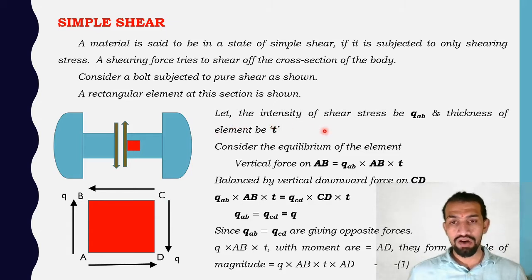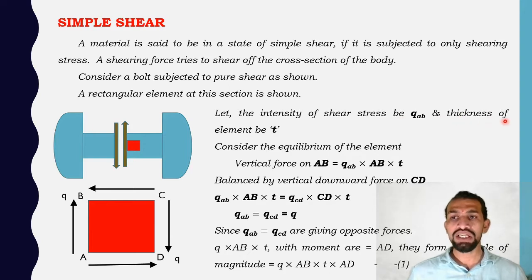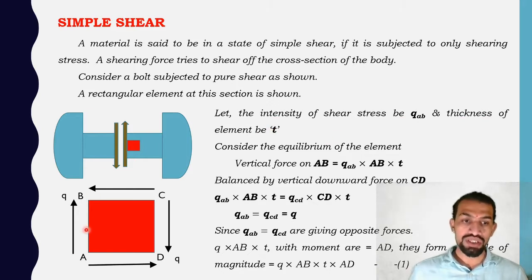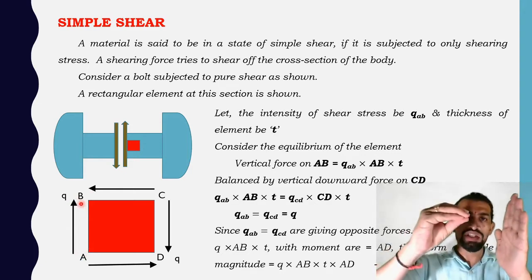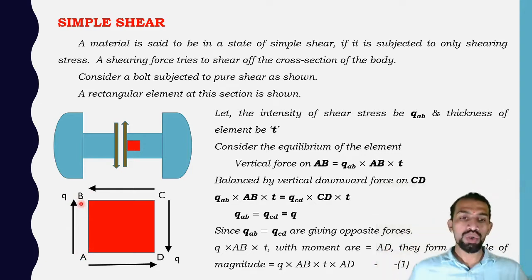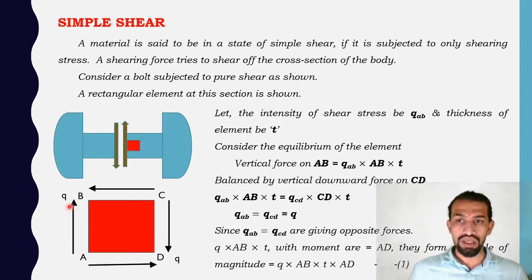Let the intensity of the shear stress be Q. The element has faces A to B and a thickness T. The shear stress Q is acting on face A to B — so the force on that side face is Q·A·B.